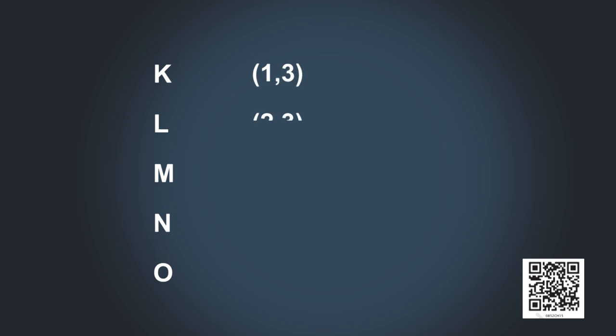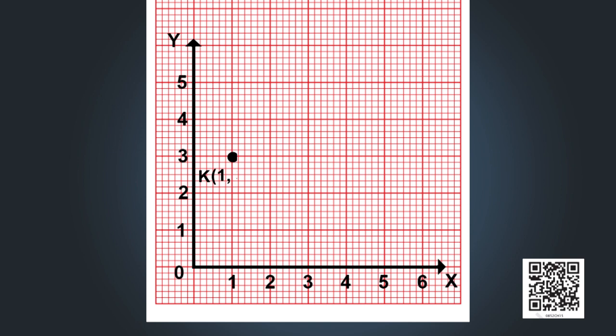We will plot a few more graphs. The coordinates of points K, L, M, N, O are (1,3), (2,3), (3,4), (3,6), and (3,3) respectively. Plotting K, L, M, N, O on the graph paper, we can observe that all the points lie on a straight line, and this line is parallel to the x-axis.